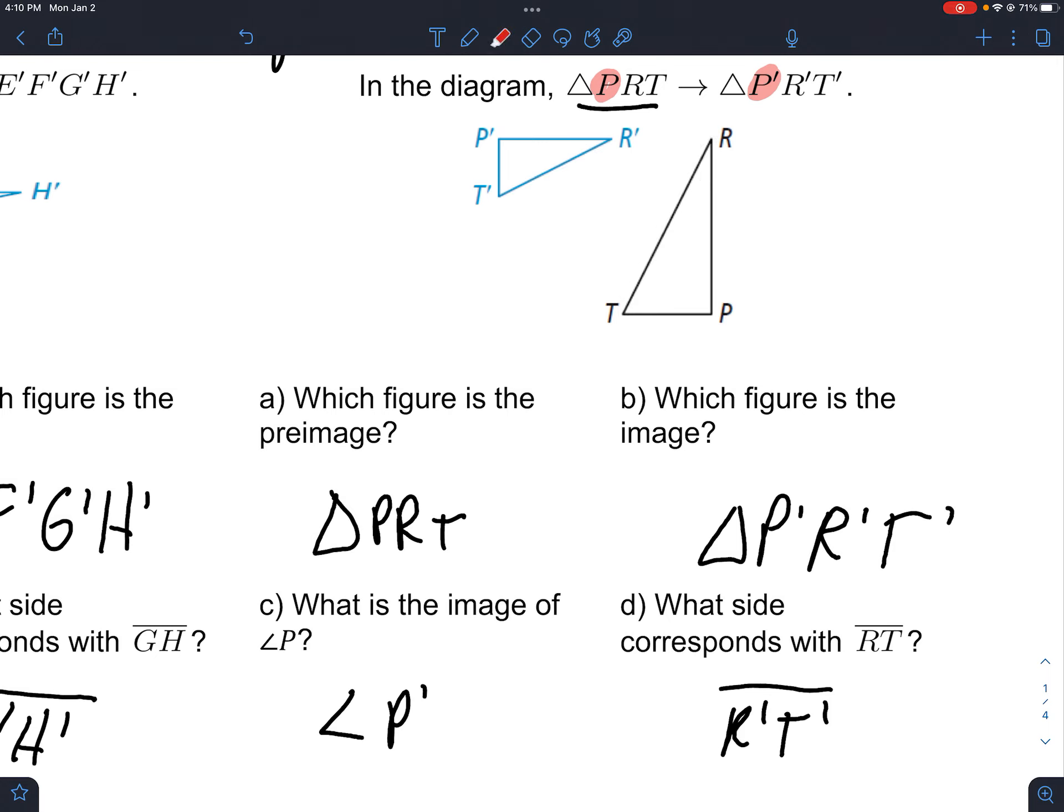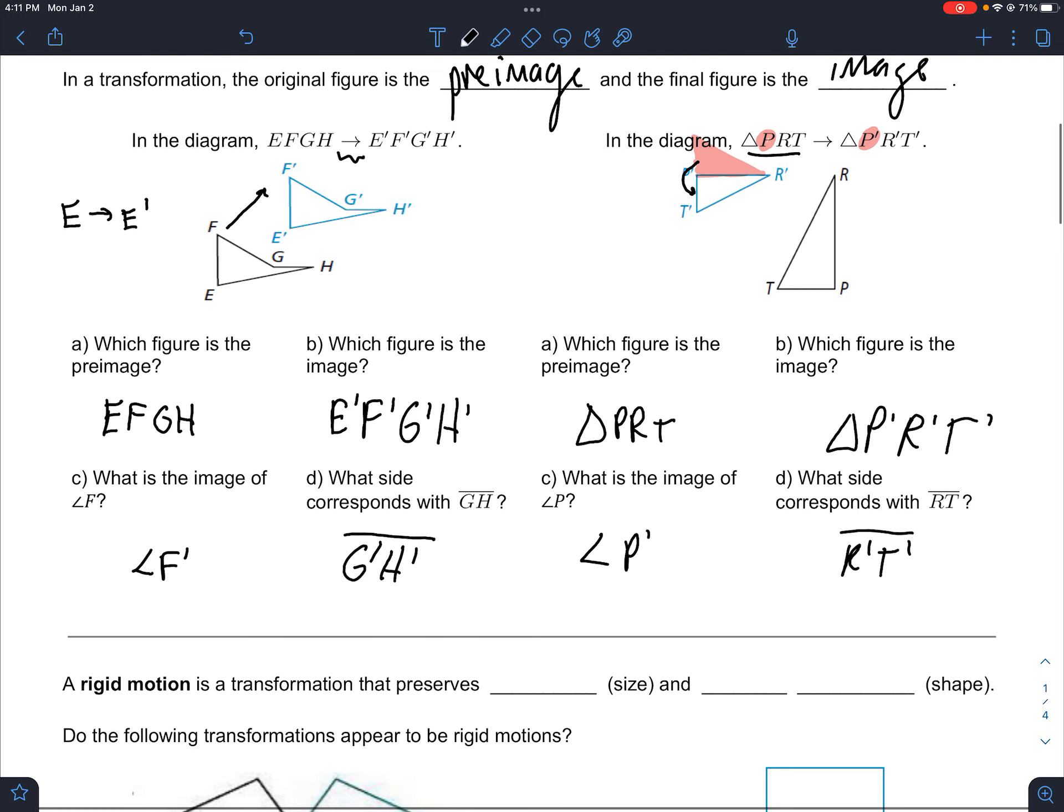To move this one, we could rotate it this way, but see how no matter what way I turn this, it doesn't really line up. We could do that, and then flip it down. So it's actually a series of multiple transformations there.